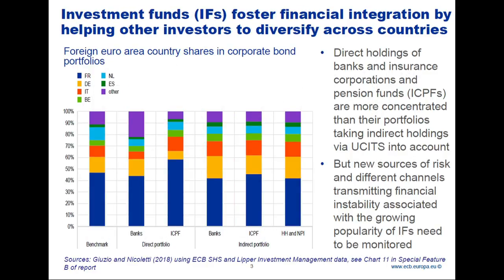After giving the overall picture on financial integration, let me highlight a few other interesting developments. One observation from a special feature of this year's report — Special Feature B on the integration of corporate bond markets — is that investment funds can play a helpful role in quantity-based integration. The chart shows a comparison of the current cross-country capitalization of corporate bond markets and the direct holdings of corporate bonds by different financial intermediaries, including investment funds, particularly UCITs.